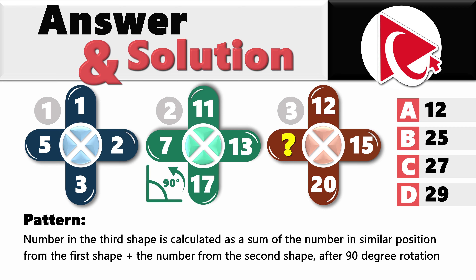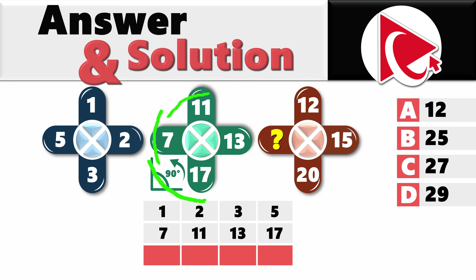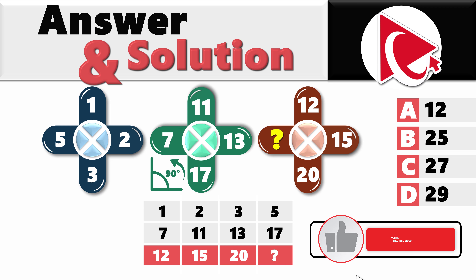Let me explain it in three simple steps. Let's build a simple table. Each shape has four numbers, so our table would need four columns. The first row will have numbers from the first shape, the second row will have numbers from the second shape, and the third row will have the calculated numbers. If we just put numbers from the same position, the logic doesn't make sense. But as soon as we shift the second row to the left, the math makes total sense.